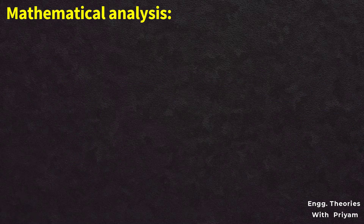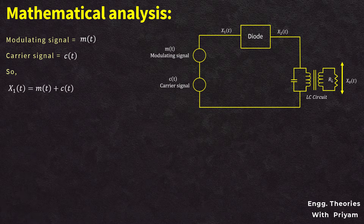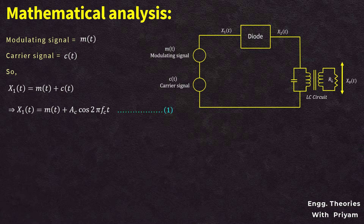Let's see the operation of the switching modulator circuit. Let the message signal be m(t) and the carrier signal be c(t). The input to the diode is the sum of the message signal m(t) plus carrier signal c(t), so x1(t) = m(t) + c(t). Replacing c(t) as Ac·cos(2π·fc·t), we get x1(t) = m(t) + Ac·cos(2π·fc·t). This is identified as equation number 1.